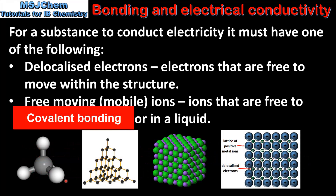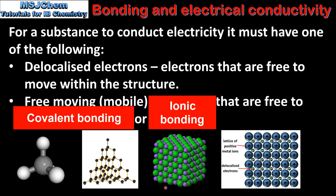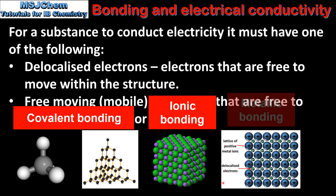In this video I'll cover the electrical conductivity of substances that have three types of bonding. The first is covalent bonding that exists between the atoms in a molecule or in a giant covalent structure. The second is ionic bonding that exists between the ions in an ionic compound. And the third is metallic bonding that exists in metals.